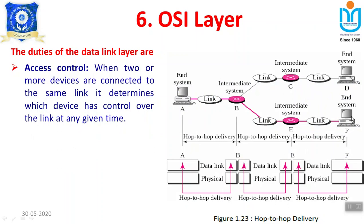There may be N intermediate devices between two end systems. For example, to forward information from one system to another, there may be 5 intermediate devices — 2 routers and 3 links, totaling 7 devices. Communication from end system A to the first router is considered 1 hop; from router to router is another hop; router to the destination is another hop. That is why data link layer delivery is called hop-to-hop or node-to-node delivery — the router is also considered a node.